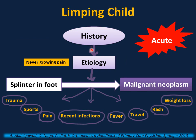History is the most critical part in assessing a child with limb pain. Acute causes can range from something as simple as a splinter in the foot to more serious causes like malignant neoplasm or even life-threatening causes like leukemia. Ask about history of trauma, sports, pain, recent infections as in toxic synovitis, fever as in infection, travel as in Lyme disease, rash as in Lyme disease or leukemia, and weight loss. Very important: growing pain is never associated with limping.